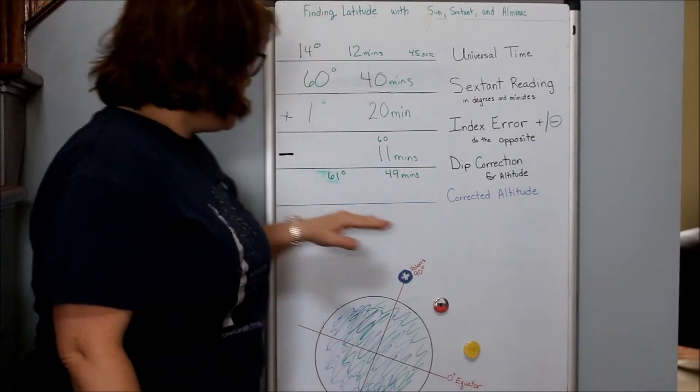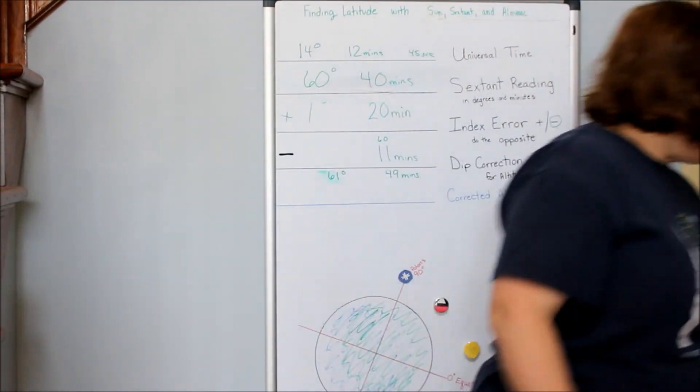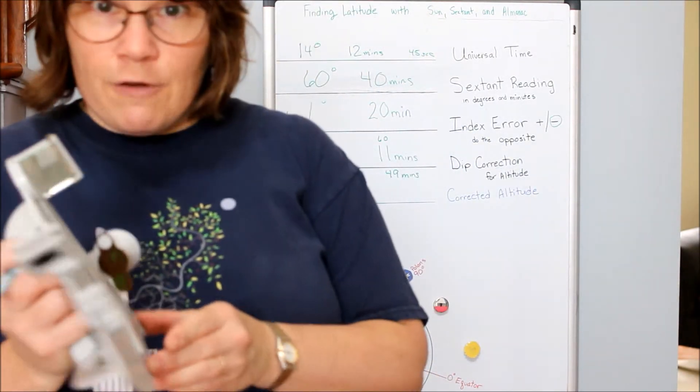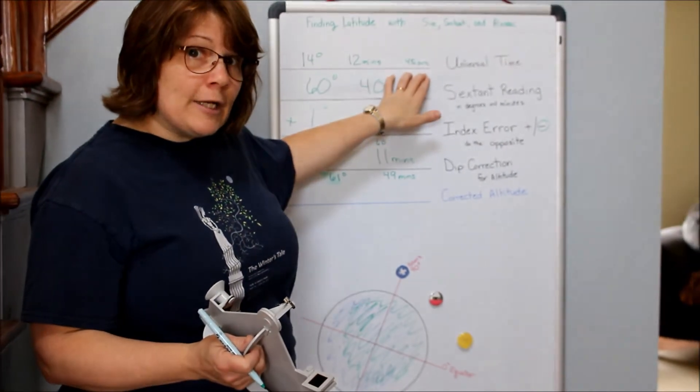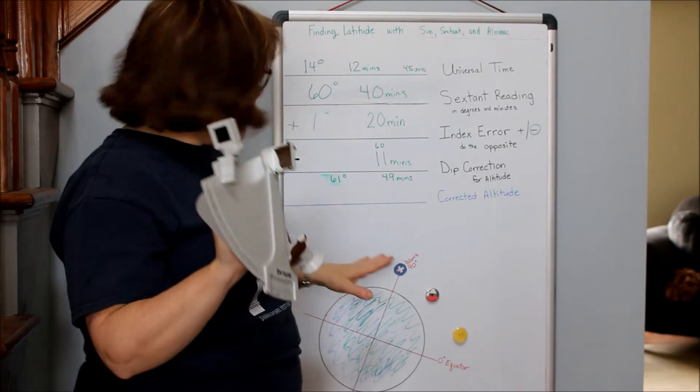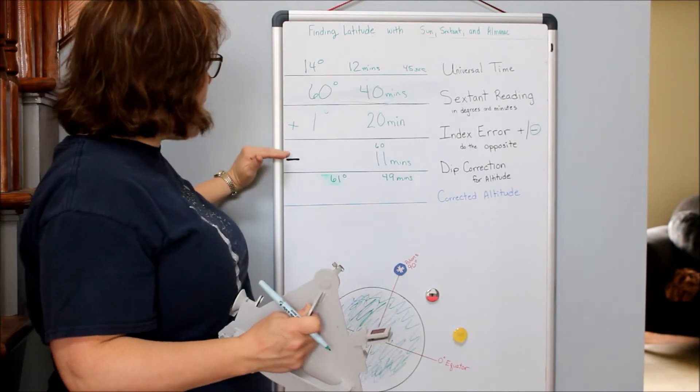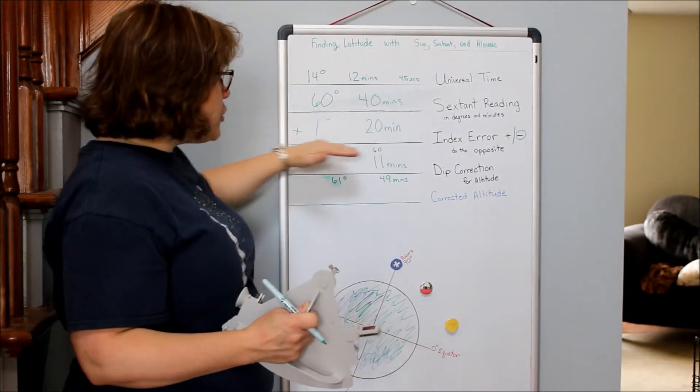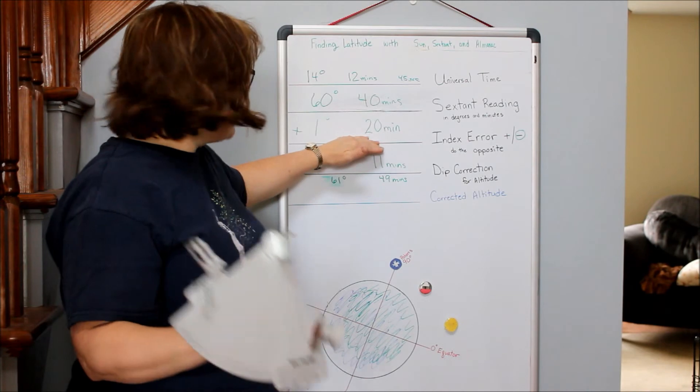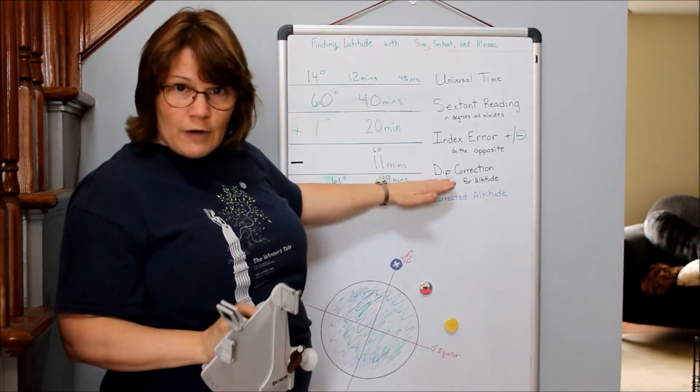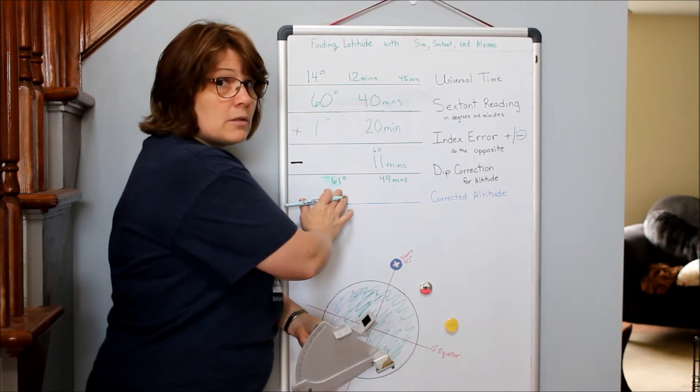My corrected altitude is 61 degrees and 49 minutes. Now I'm ready to find my latitude. I had to correct for manufacturing or wear and tear, know what time I was taking that reading, know my reading, and know my dip correction - how high off the ground I am. It's very simple math: take your sextant reading plus or minus your index error (remember you do the opposite - if it's negative you add, if it's positive you subtract), then minus your dip correction for altitude. That gives you your corrected altitude of 61 degrees and 49 minutes.